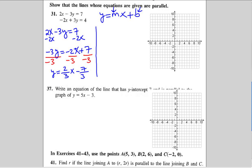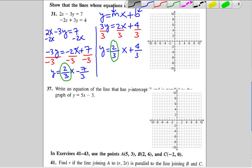Let's put the second equation in slope-intercept form so 3y equals, we're going to add 2x to both sides, so that's 2x plus 4. We're going to divide both sides by 3. So y equals 2 thirds x plus 4 thirds. So the slopes are the same. That's 2 thirds and 2 thirds. And the y-intercepts are different. That's negative 7 thirds and 4 thirds.